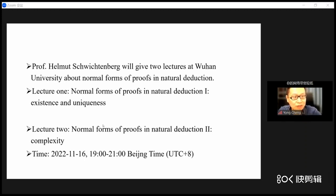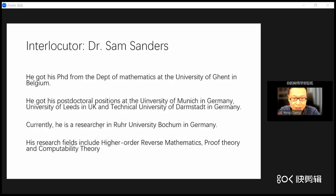It is also our pleasure to introduce the interlocutor, Dr. Sam Sanders. Dr. Sanders got his PhD from the Department of Mathematics at the University of Ghent in Berlin. After that, he held postdoctoral positions at the University of Munich in Germany, the University of Leeds in the UK, and the Technical University of Darmstadt in Germany. Currently he is a researcher at Ruhr University Bochum in Germany. His research fields include higher-order reverse mathematics, proof theory, and computability theory.